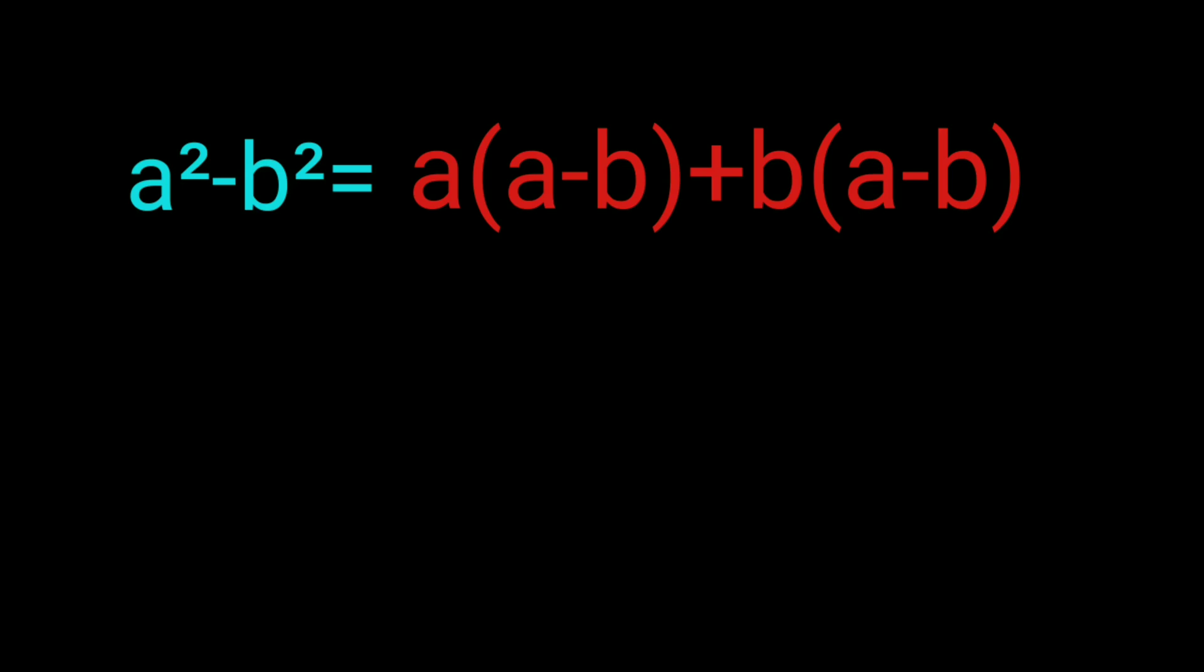I took (a - b) common from the two terms. What's left is a here and b here, so we get (a - b)(a + b). That's it!